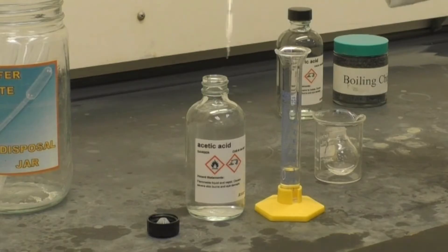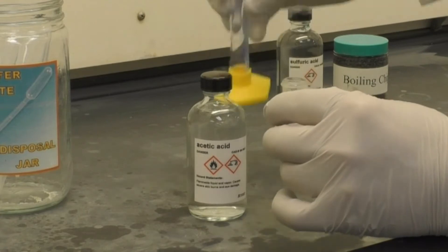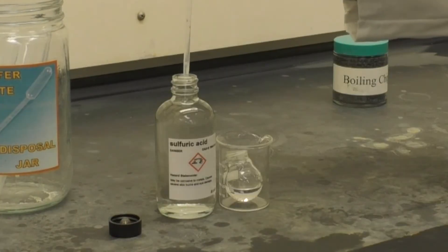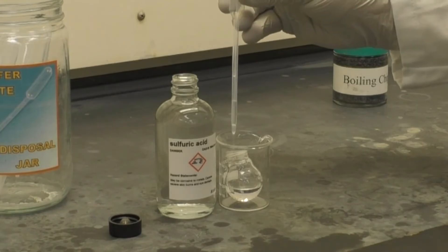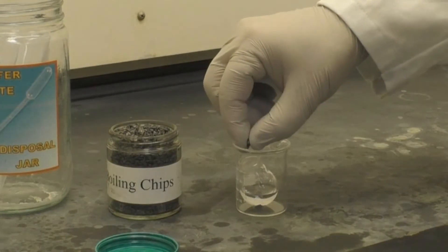Then, measure 3 ml of concentrated acetic acid into a 10ml graduated cylinder and add that to the flask. Next comes 2-3 drops of concentrated sulfuric acid, and lastly 3-4 boiling stones.